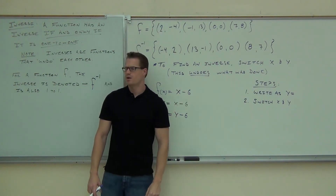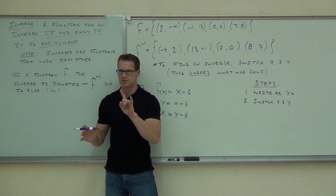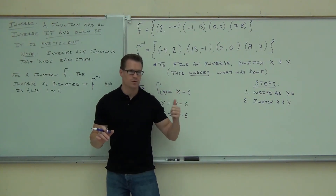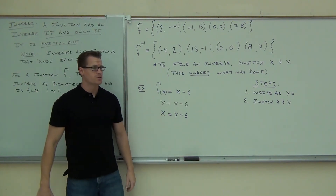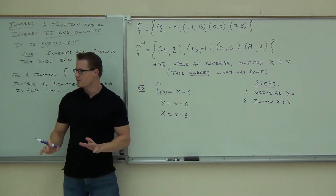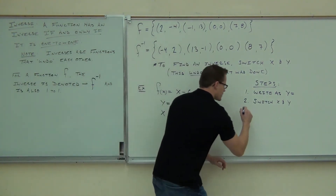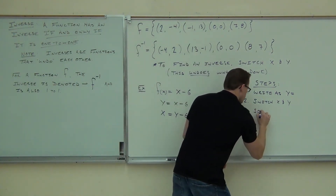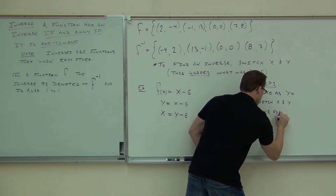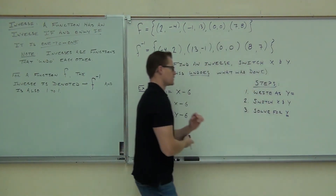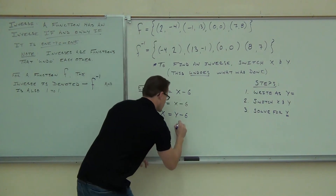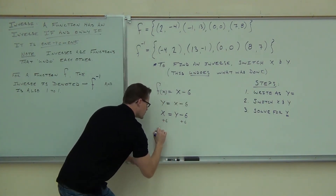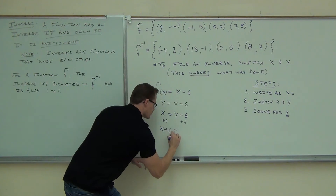We're almost done — two little steps left. Step three: can you solve that for Y? That's what you're going to do now. Solve that thing for Y; it shouldn't be very hard. So I'm going to get X plus 6 equals Y.